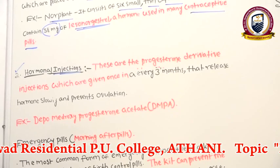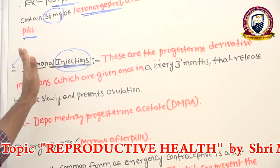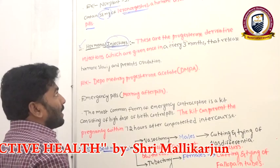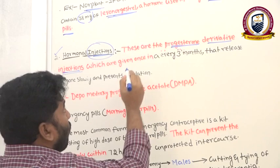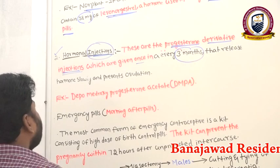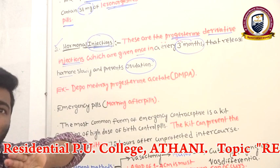Next are hormonal injections, also called injectables. These are progesterone derivative injections given once every three months. They slowly release the hormone and prevent ovulation.